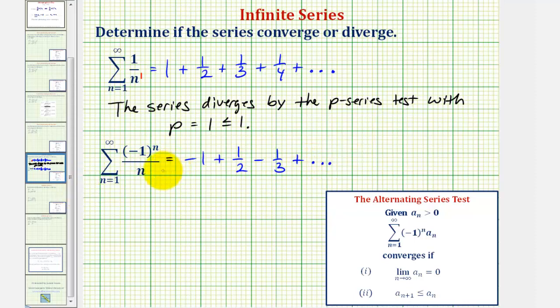So because we have an alternating series, we'll apply the alternating series test, where we're given that a sub n is greater than zero, where a sub n is the non-alternating part of the series, and the alternating series converges if the limit as n approaches infinity of a sub n equals zero, and if a sub n plus one is less than or equal to a sub n. So notice in this case, a sub n would be equal to one over n.